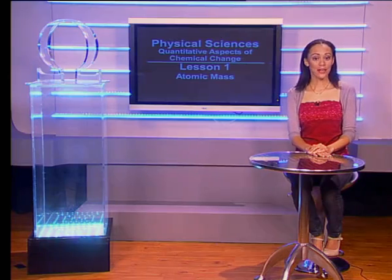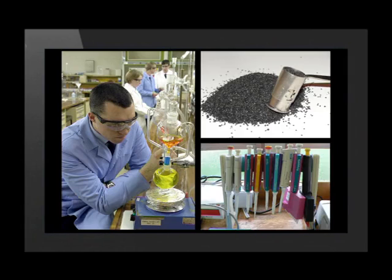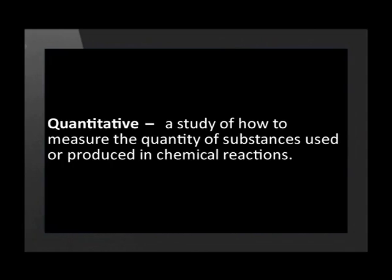Welcome to the first lesson in the series on quantitative aspects of chemical change, also known as stoichiometry. Scientists often have to measure chemical substances for various reasons, such as to find out how much of a substance is present or to work out how much of a chemical is needed or produced in a chemical reaction. Quantitative chemistry is a study of how to measure the quantity or amount of substances to be used or produced in chemical reactions.